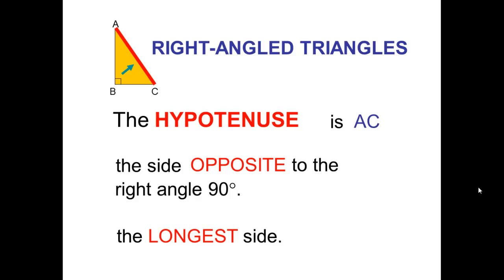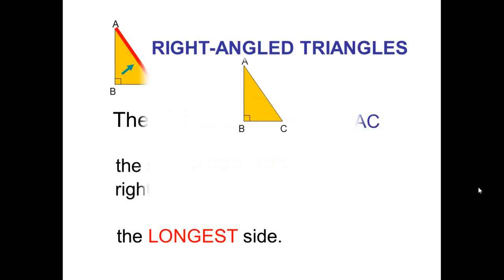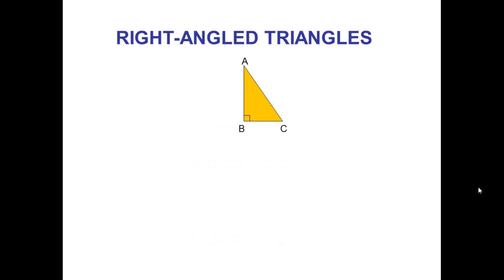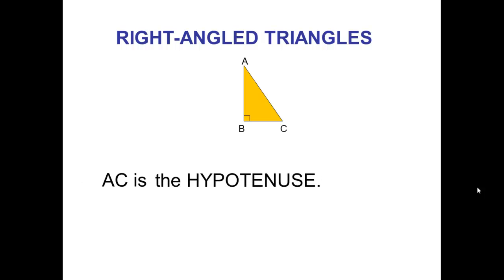The hypotenuse is also always the longer side. In this triangle, the hypotenuse is always the side opposite the 90 degrees — AC is the hypotenuse.